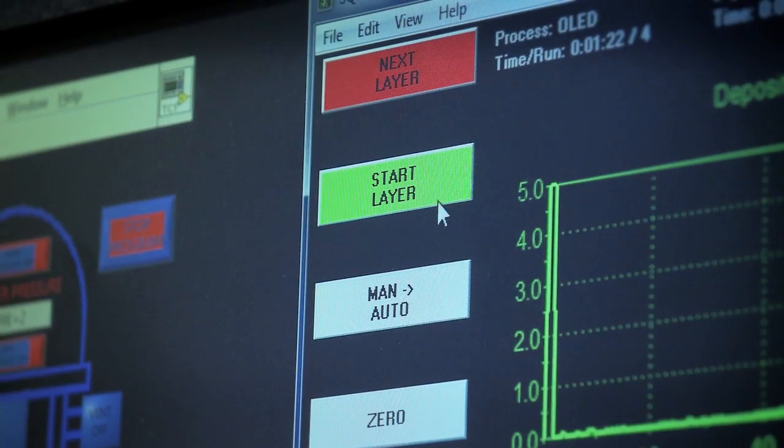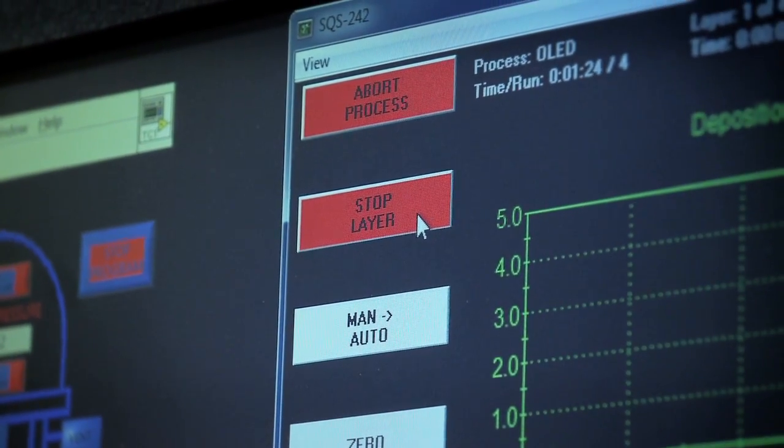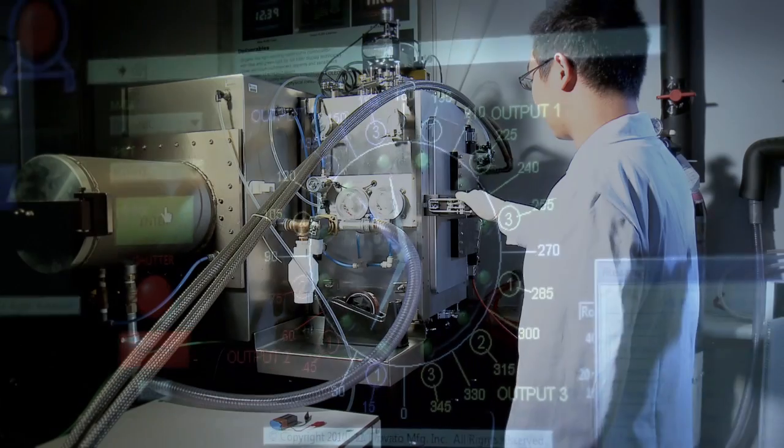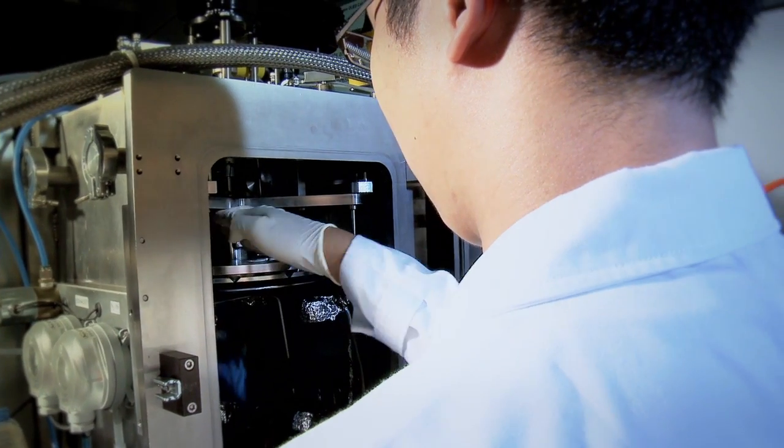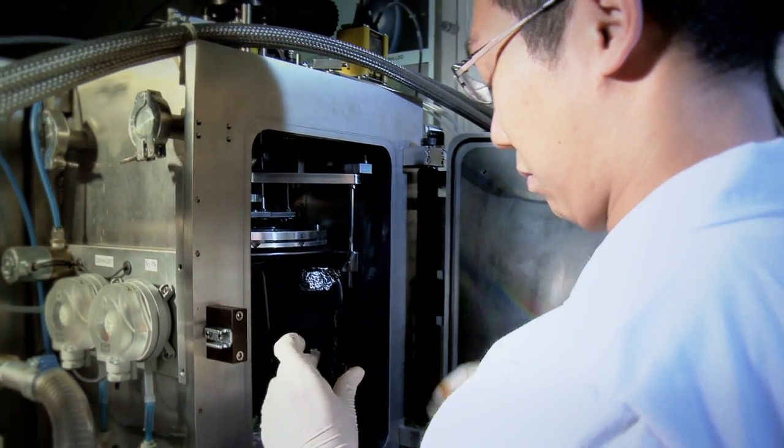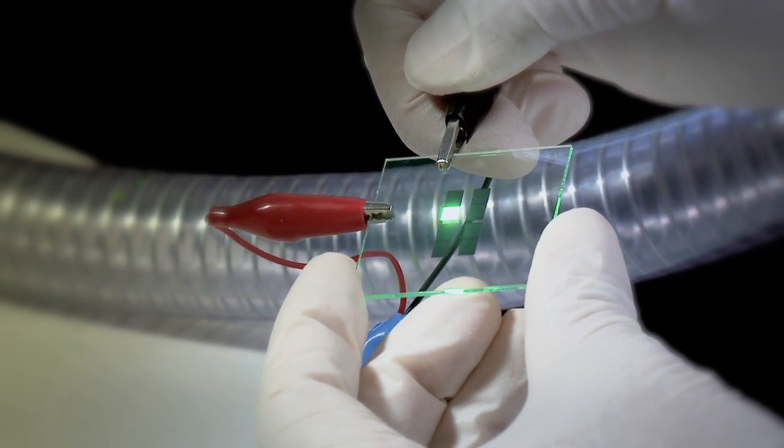Particularly if we can find a way to make the three primary colors—the blue, green and the red—then you can have multicolor, full color display devices as well as make the white organic light emitting diodes which will be very important for solid state lighting.